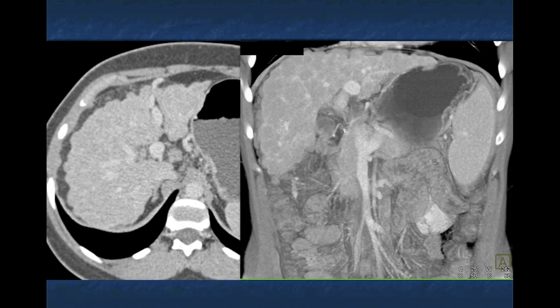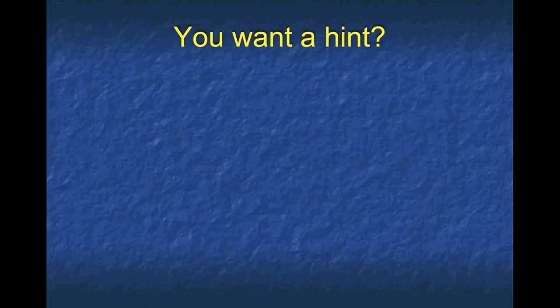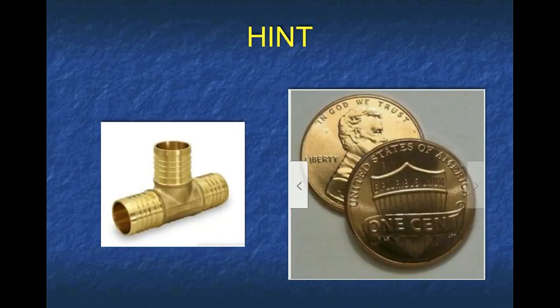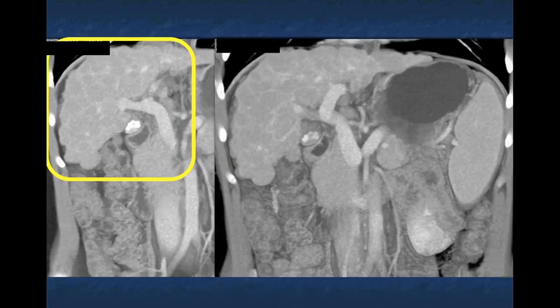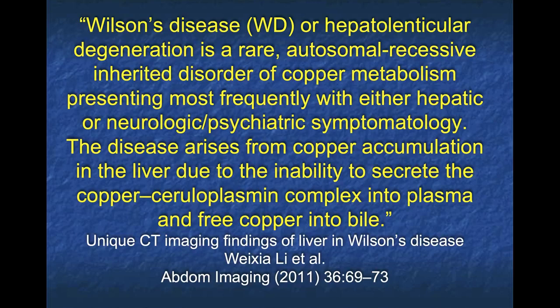You see what looks like multiple masses within the architecture of the liver. We gave a hint: 'what the heck is a pipe and two pennies?' That means copper — and this was Wilson's disease, a disease related to copper metabolism. Look at those multiple lesions with vessels in a geographic pattern. Wilson's disease, or hepatolenticular degeneration, is a rare autosomal recessive inherited disorder of copper metabolism.